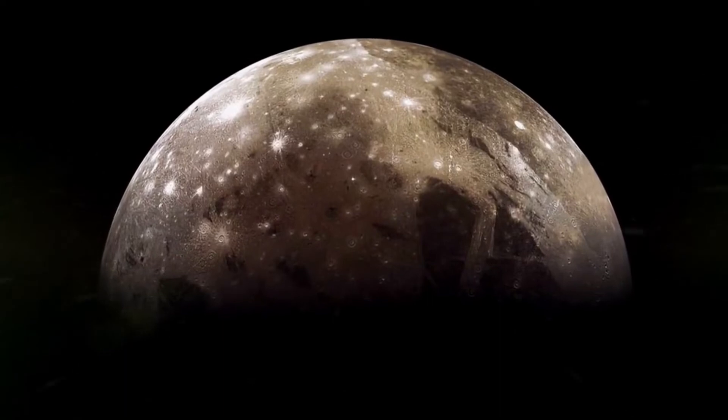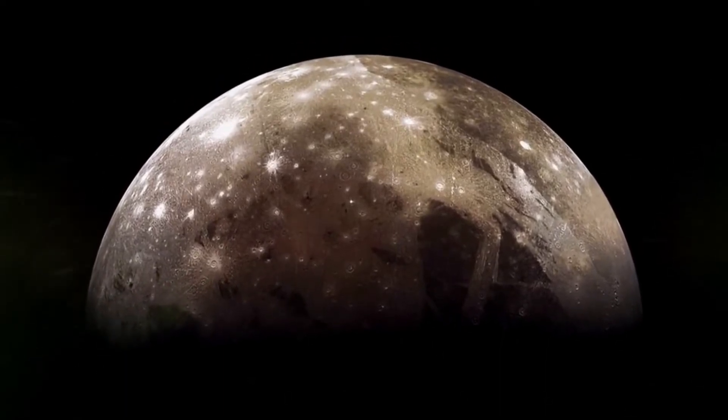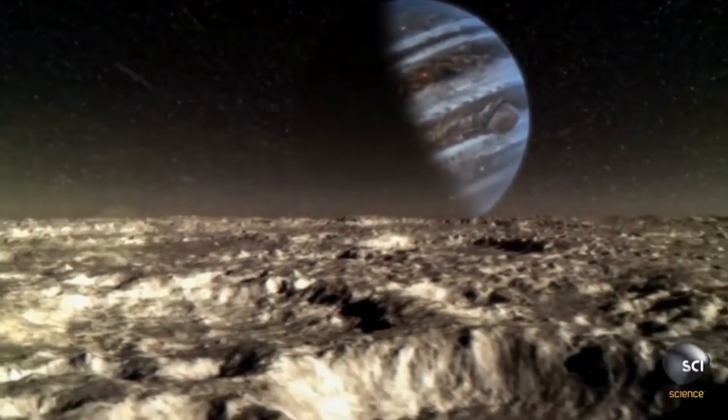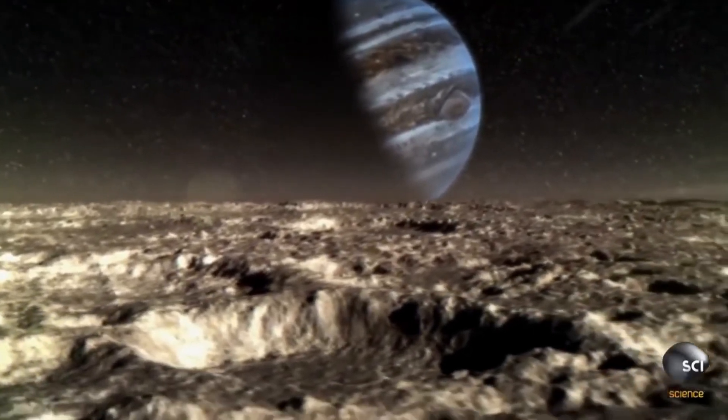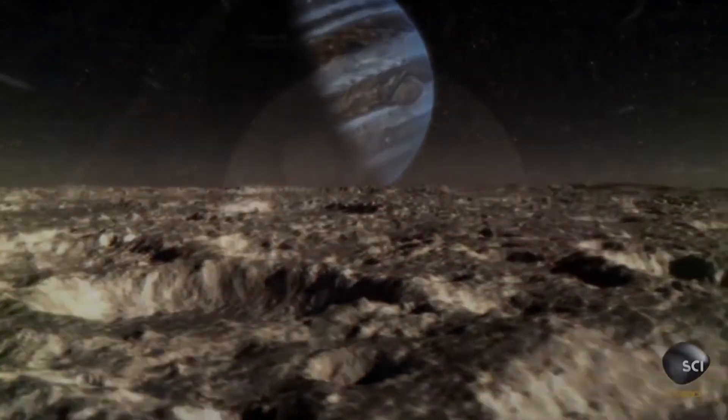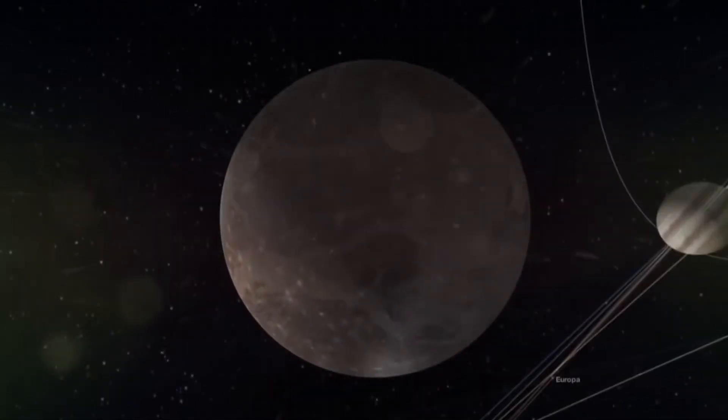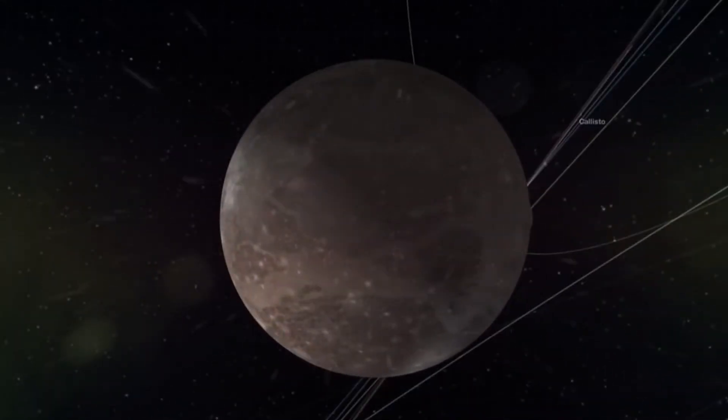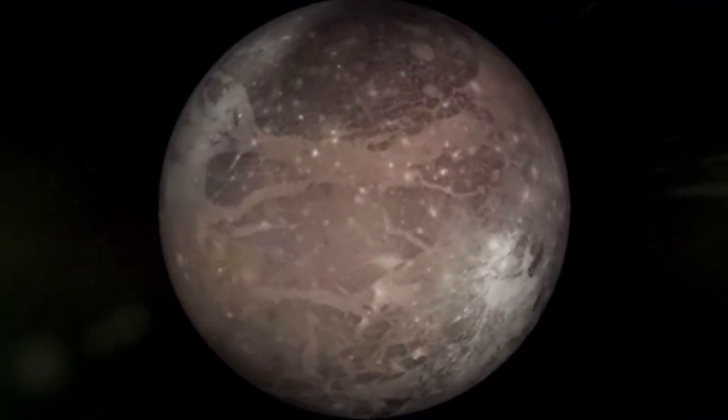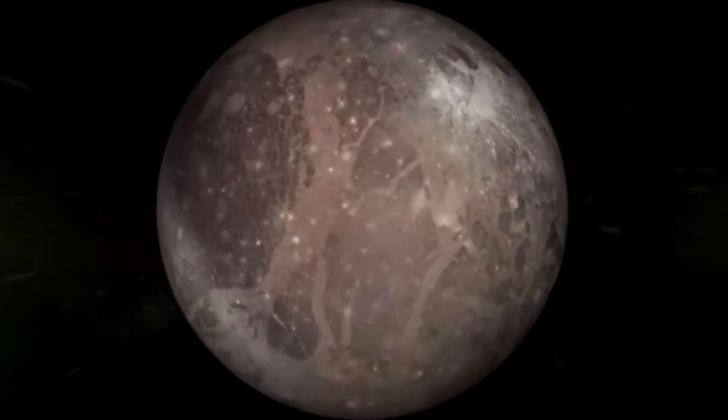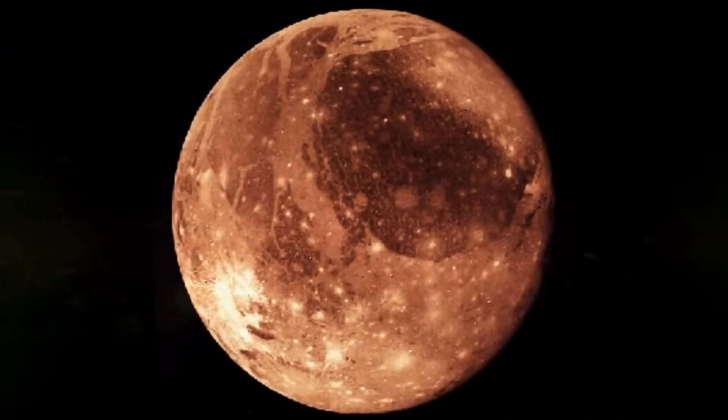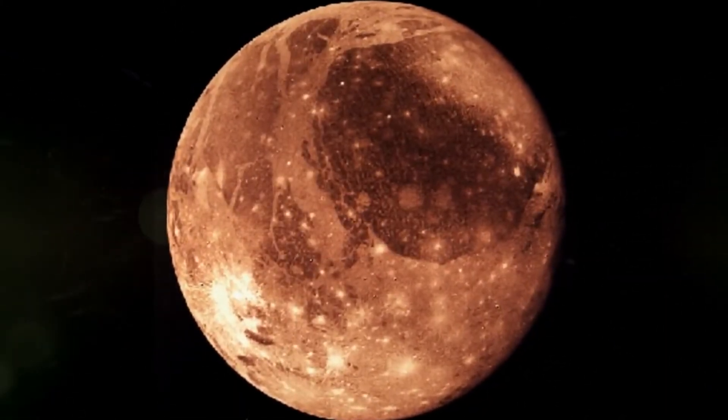The surface of Ganymede consists of two types of landforms. About 40% of it is covered with numerous craters, and 60% with light grooves which give the satellite its characteristic appearance. The grooves were probably formed as a result of tectonic activity or during the release of water from below the surface. These grooves are over 609 meters high and stretch for thousands of kilometers.